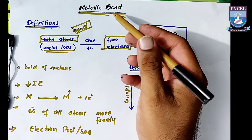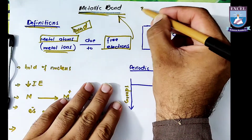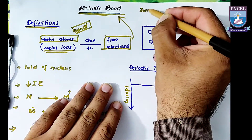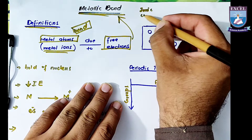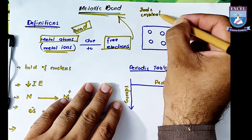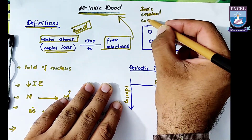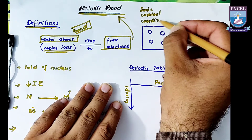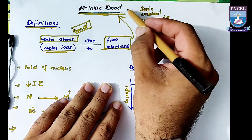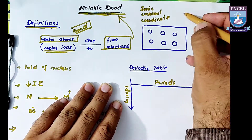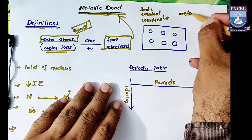We are studying different types of bonds. Before this, we have already studied ionic bond, and we have also studied covalent bond and coordinate covalent bond. Today we are studying metallic bond — so these are different types of bonds.